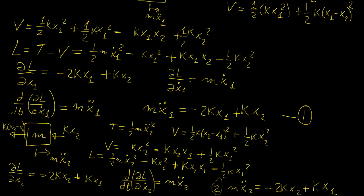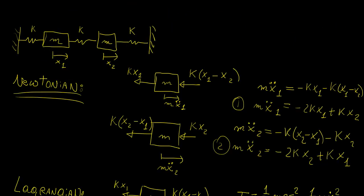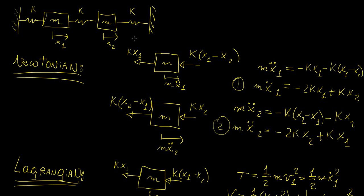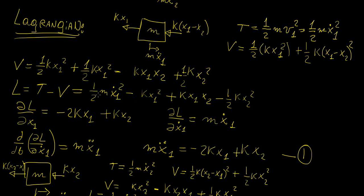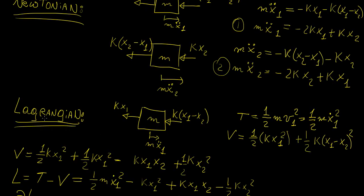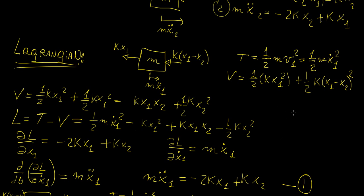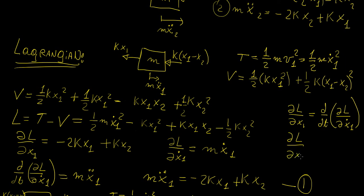That is how you apply Lagrangian analysis to a two-degree-of-freedom system. In general, you do it the same way as Newtonian: split the system into each body and apply the Euler-Lagrange equations for each body. We had one Euler-Lagrange equation per degree of freedom — ∂L/∂x1 and d/dt(∂L/∂ẋ₁) for body 1, and similarly for body 2. In general, you have one Euler-Lagrange equation for every degree of freedom in the system.